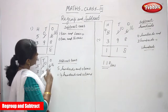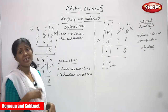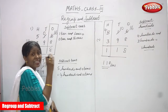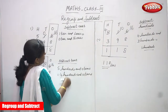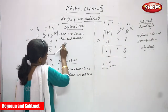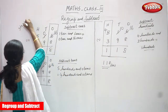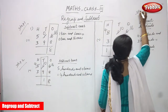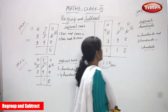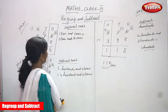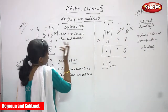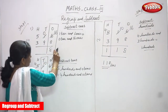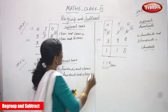This is the exact regrouping method — we can also call it regrouping twice, because we regrouped two times: once in the ones place and once in the tens place. Regrouping means you subtract each and every digit individually. Step one: subtract ones. Step two: subtract tens. Step three: subtract hundreds.